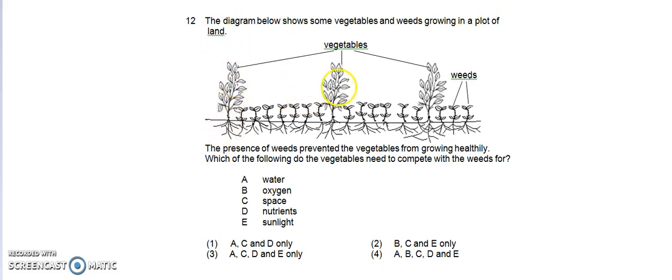So these are some of the vegetables, and in between them we have weeds. The presence of weeds prevented the vegetables from growing healthily. Which of the following do the vegetables need to compete with the weeds for?